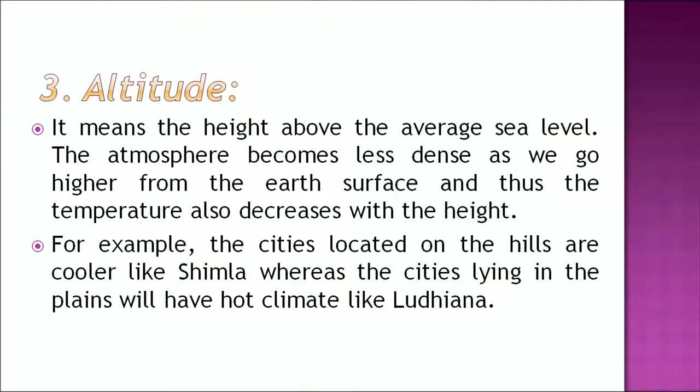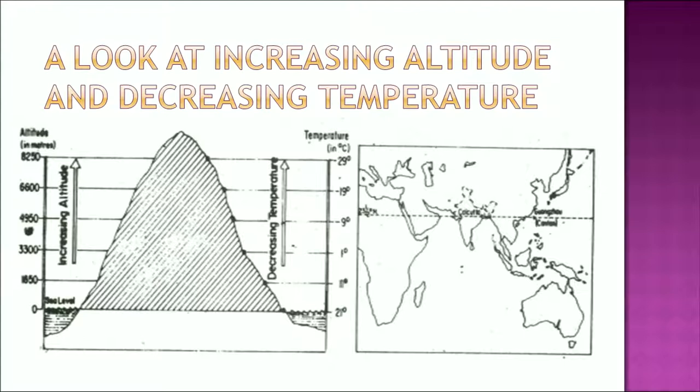Another factor is altitude — the height above the average sea level. The atmosphere becomes less dense as we go higher from the earth's surface and thus the temperature also decreases with height. For example, cities located on the hills such as Shimla will be cooler than cities on the plains such as Ludhiana. Now look at this map which shows how temperature decreases with increasing altitude.